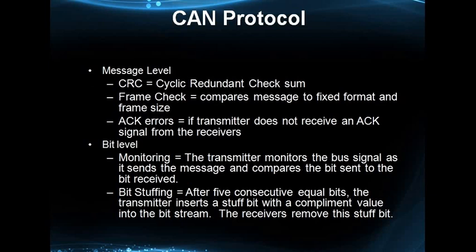Then there is frame check error. Some bits in CAN, like IDE and R0, are sent in fixed format — they do not change and are always transmitted as dominant bits. If they are not dominant, it becomes a frame check error. There is also acknowledgement error: if none of the nodes acknowledge the transmitter, then it becomes an acknowledgement error.